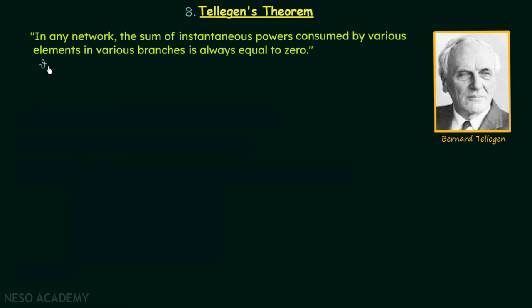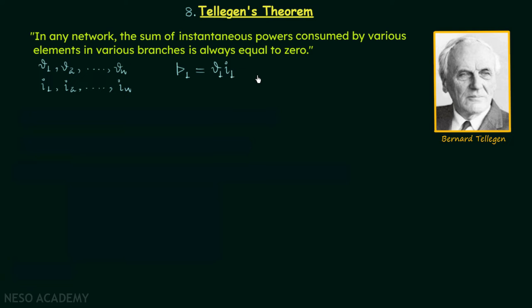To have the mathematical form, we assume we have n elements in n branches of any network, with voltages v1, v2, all the way to vn, and currents through these elements as i1, i2, all the way to in. For element number one, the voltage is v1 and the current is i1, so the instantaneous power p1 equals v1 multiplied by i1. Similarly, for element two, power equals v2 times i2, and for the nth element, power equals vn times in.